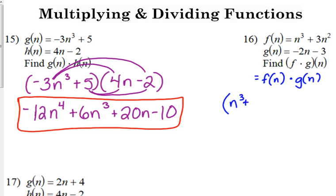We take our f of n function, n cubed plus 3n squared, put it in parentheses, times our g of n function, negative 2n plus 3, in parentheses. We've got a binomial times a binomial again, so we FOIL it out.